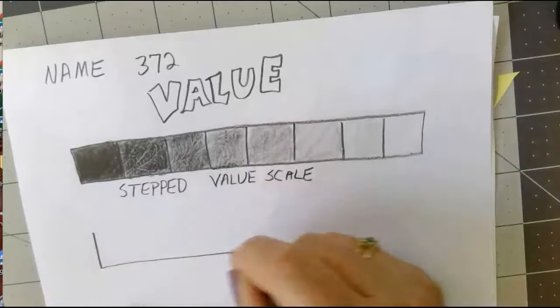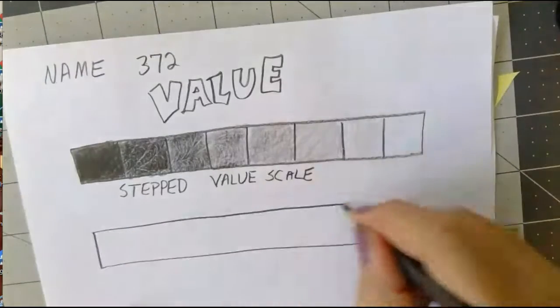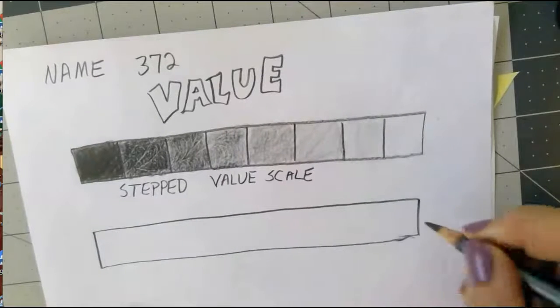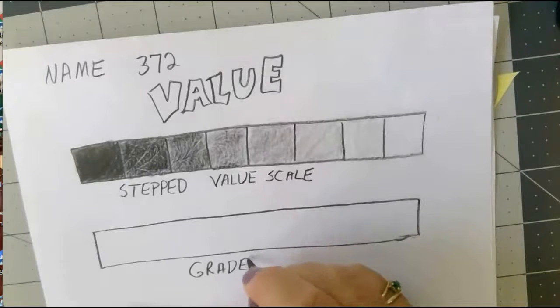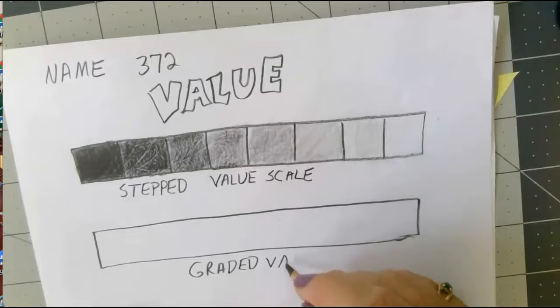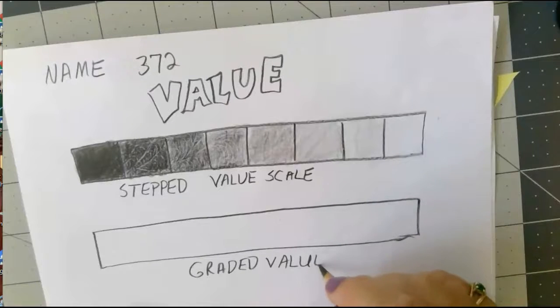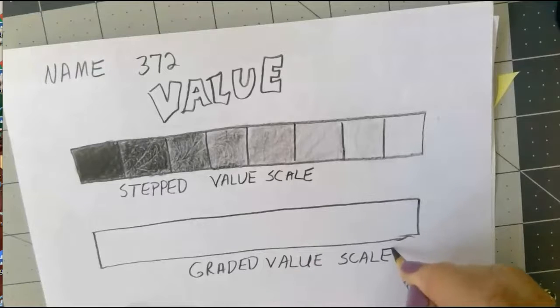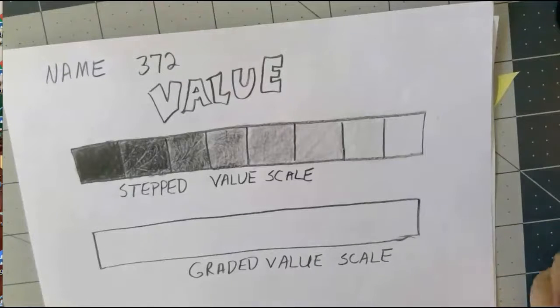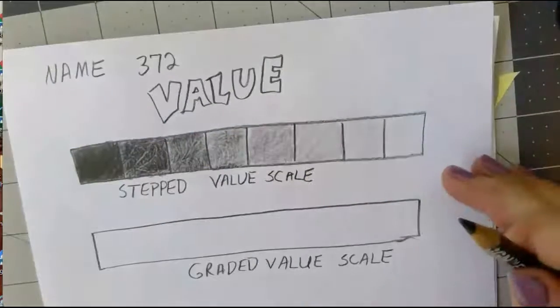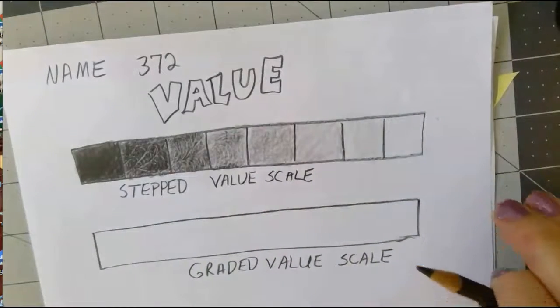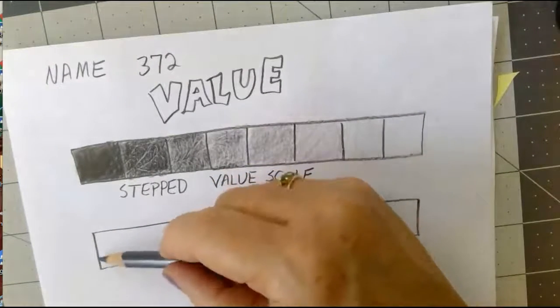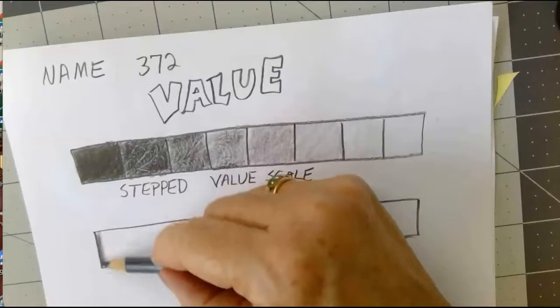That is a stepped value scale. Make a stepped value scale and then we're going to do something similar. We need another long box like before, but this time we're going to make a graded value scale. In a graded value scale we still want all of these different kinds of values, but instead of stepping down we're going to make a smooth transition.